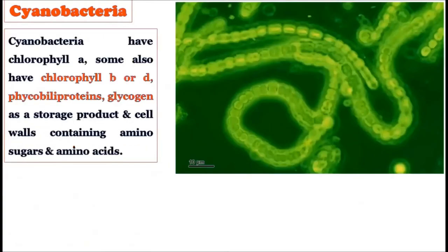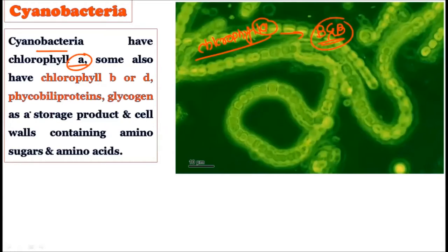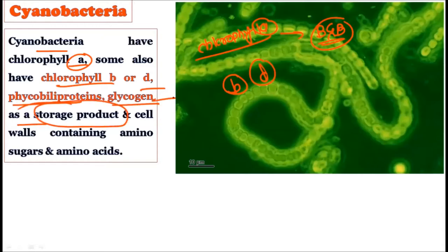Cyanobacteria have chlorophyll A — the pigment generally found in algae and other plants. Sometimes they even contain chlorophyll B and D. Along with phycobiliproteins and glycogen as storage products. The characteristics are similar to algae, because algae contains chlorophyll A, B, and D in their different forms.